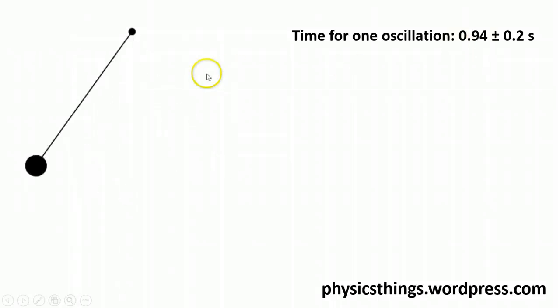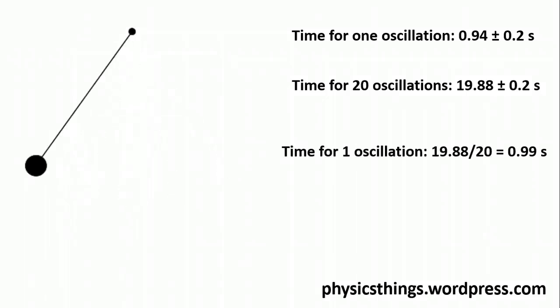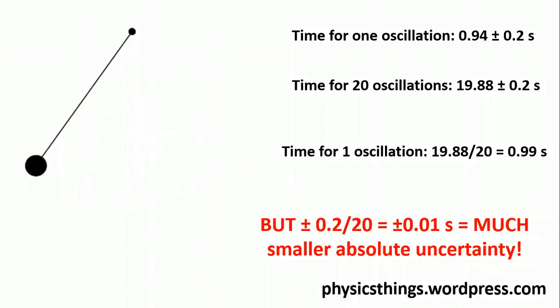How can I reduce that? Well, if I measure multiple oscillations—so let's say I were to measure 20 full oscillations from top to top there and back again—then that means I have a much longer time interval. In fact, for 20 oscillations on this, I get 19.88 seconds. Now, I've still got the same absolute uncertainty, 0.2 seconds, in that time measurement there, which was for 20 oscillations. Now, to find the time for one oscillation, I divide that time by 20. But as it happens, I also divide my absolute uncertainty by 20. This drops it down from plus or minus 0.2 to plus or minus 0.01 seconds—a much smaller absolute uncertainty and therefore a much more reliable result.